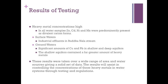Now I will sum up the results for the heavy metal testing. The heavy metal concentrations were high in all water samples. Zinc, cadmium, nickel, and manganese were predominantly present as divalent cation forms. In surface waters, the high level of heavy metals is believed to be caused by industrial effluents in the Budhanala stream. In ground waters, significant amounts of copper and lead were found in the shallow and deep aquifers, with the shallow aquifers containing a far greater amount of heavy metals than the deep aquifers. These results were taken over a wide range of area and water sources, giving a solid set of data. The results will assist in controlling the concentrations of these heavy metals in water systems through testing and regulations.